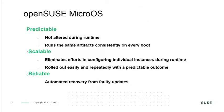OpenSUSE Micro OS is an immutable operating system that cannot be altered during runtime. This provides the same experience every time a system is booted. Systems built on Micro OS are scalable because there's no configuring individual instances at runtime. Additionally, anytime an update fails, you can always roll back to the previous working instance. This greatly reduces the risk of maintaining your devices.